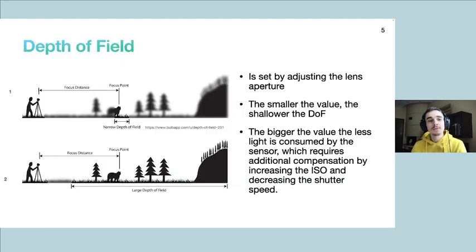In short, depth of field determines the depth of the photo environment that will be in critical focus and is a direct product of the lens aperture which can be set manually.